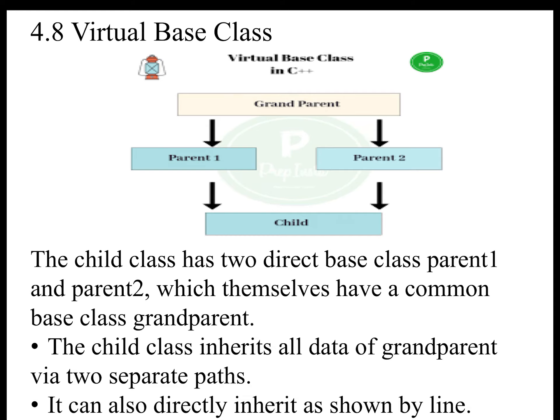Grandparent is a base class. Parent1 and Parent2 are derived classes. In child class C, Parent1 and Parent2 are base classes, and Child is the derived class. The child class has two direct base classes, Parent1 and Parent2, which themselves have a common base class, Grandparent. So the child class inherits all data of the grandparent via two separate paths — through Parent1 and Parent2. It can also directly inherit as shown in the diagram.